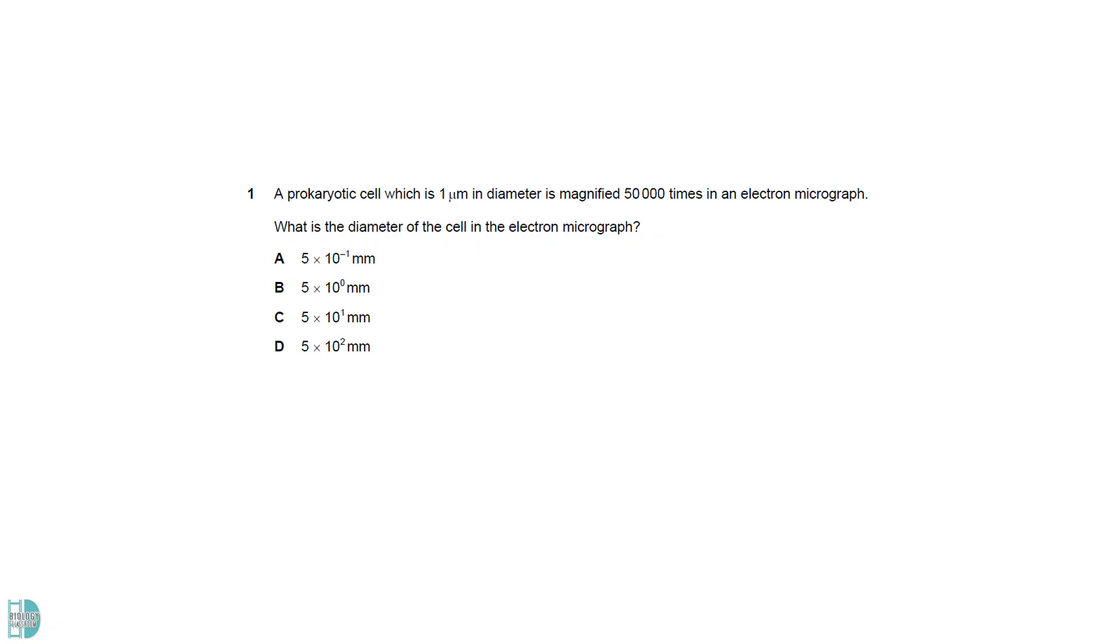To find the image diameter of the cell in the electron micrograph, we multiply the actual size by the magnification, then convert it to millimeters. Now convert 50 millimeters to standard form. It is 5 times 10 to the power of 1 millimeters.